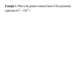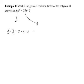To show where GCFs come from, I'm going to use prime factorization, though you don't have to do this every time. I'll start by breaking these into their prime factors. 6 is 3 times 2, both of which are prime. x³ is really x times x times x. For the second term, 15x², 15 breaks into 3 times 5, and x² is just x times x.